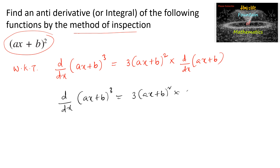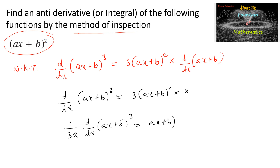...the differentiation of (ax + b) is a. Or we can write: 1 by 3a times d by dx of (ax + b) whole power 3 is equal to (ax + b) whole square. This can also be written as d by dx of 1 by 3a into (ax + b) whole power 3.